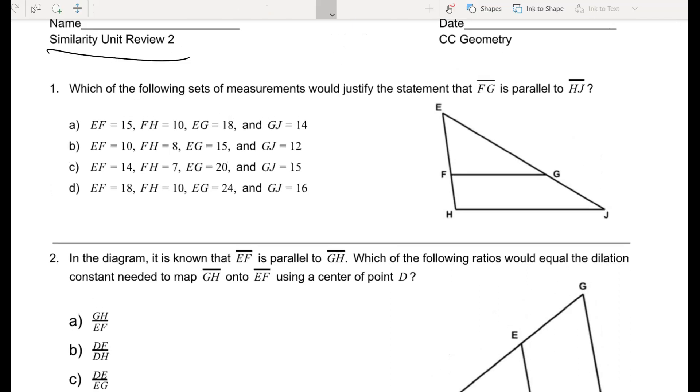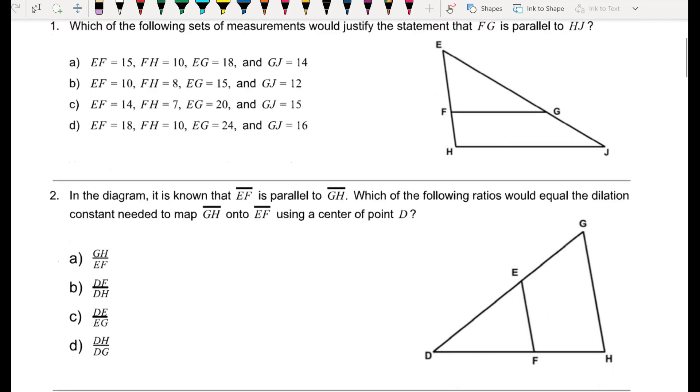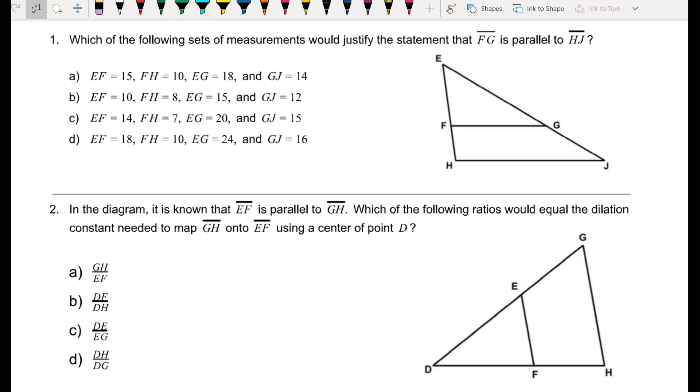In this video, I'm going to go through the second review for the similarity unit quiz coming up. For number one, which of the following sets of measurements would justify the statement that FG is parallel to HJ? Well, if those are parallel, we would have some congruent corresponding angles, and that would be enough to prove that the triangle on top and the big triangle are two similar triangles.